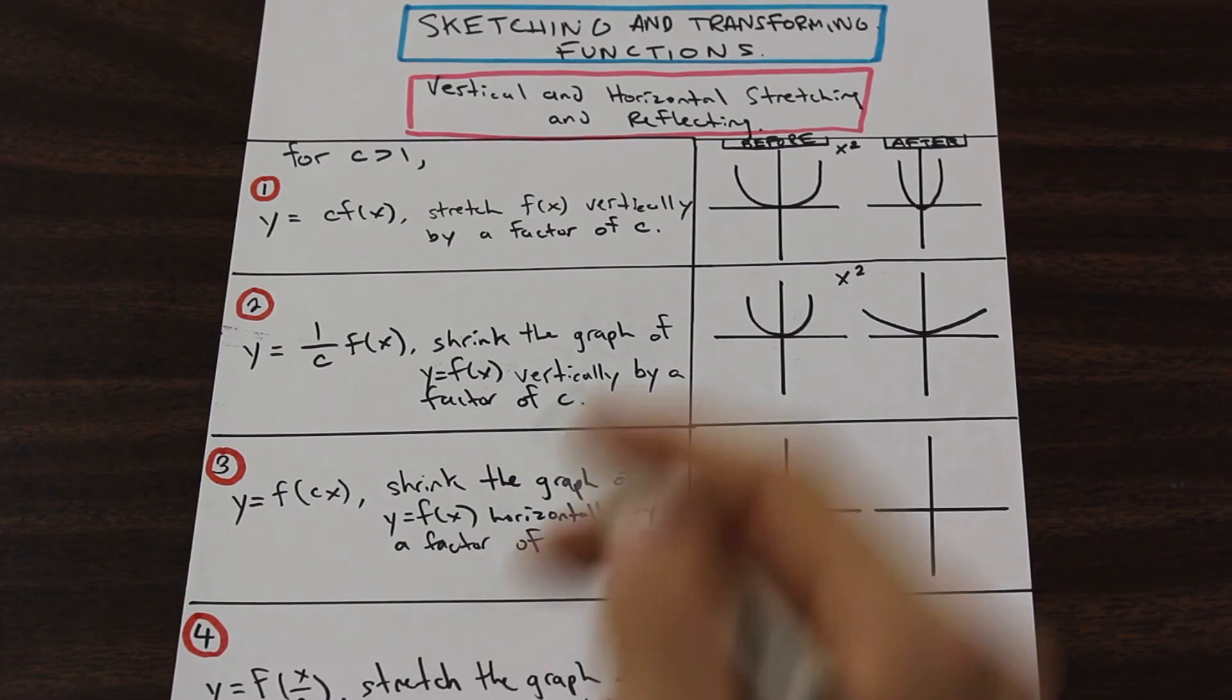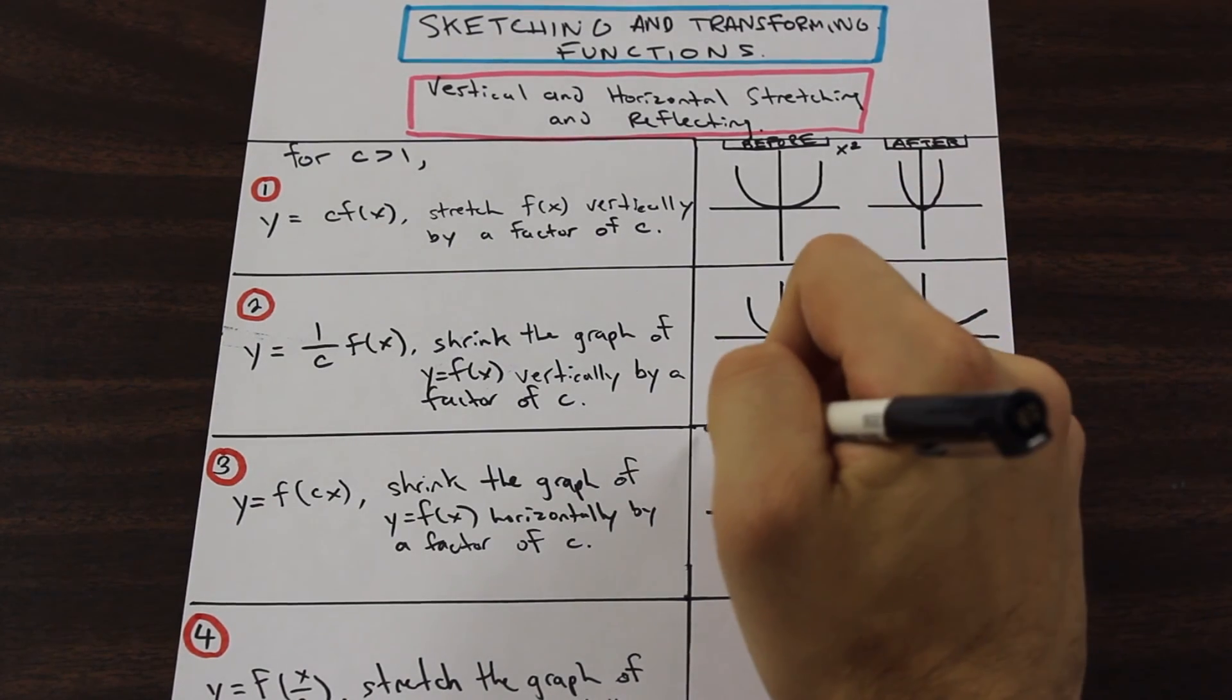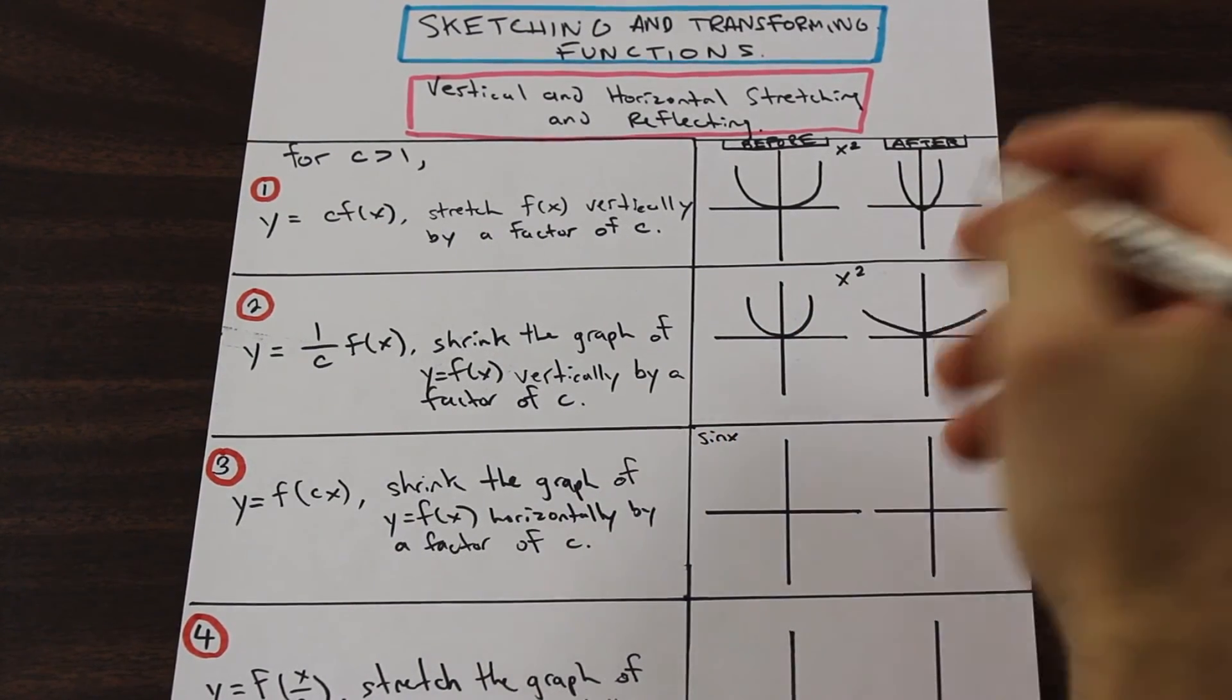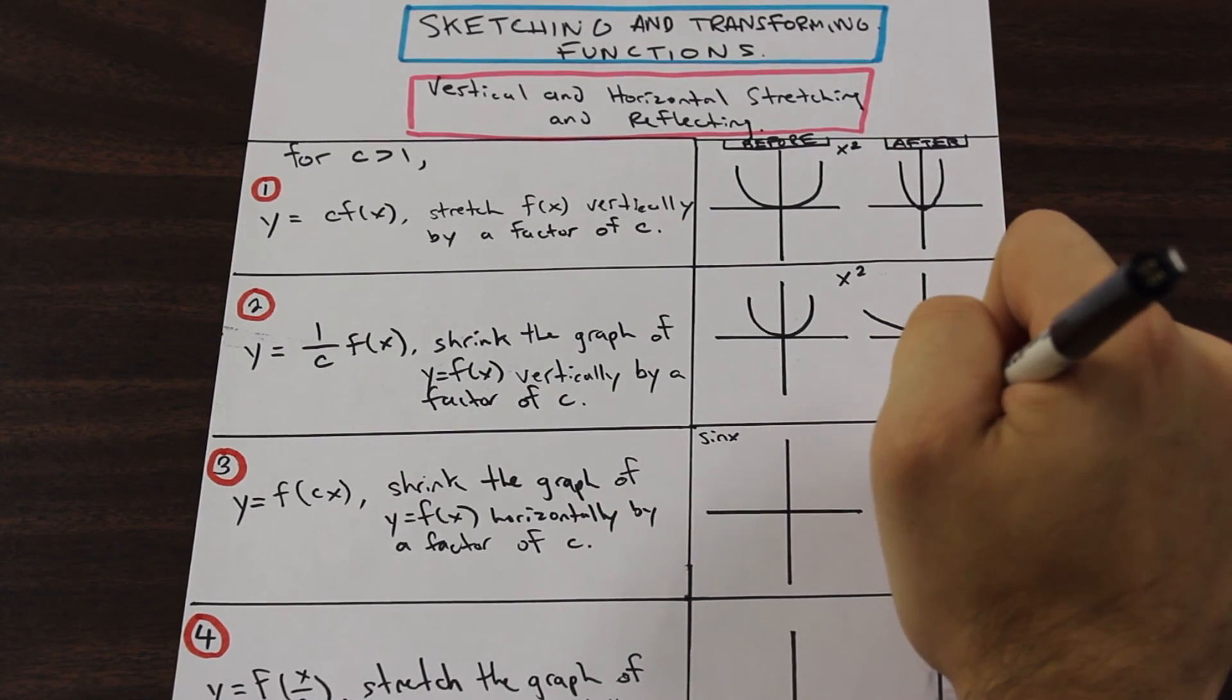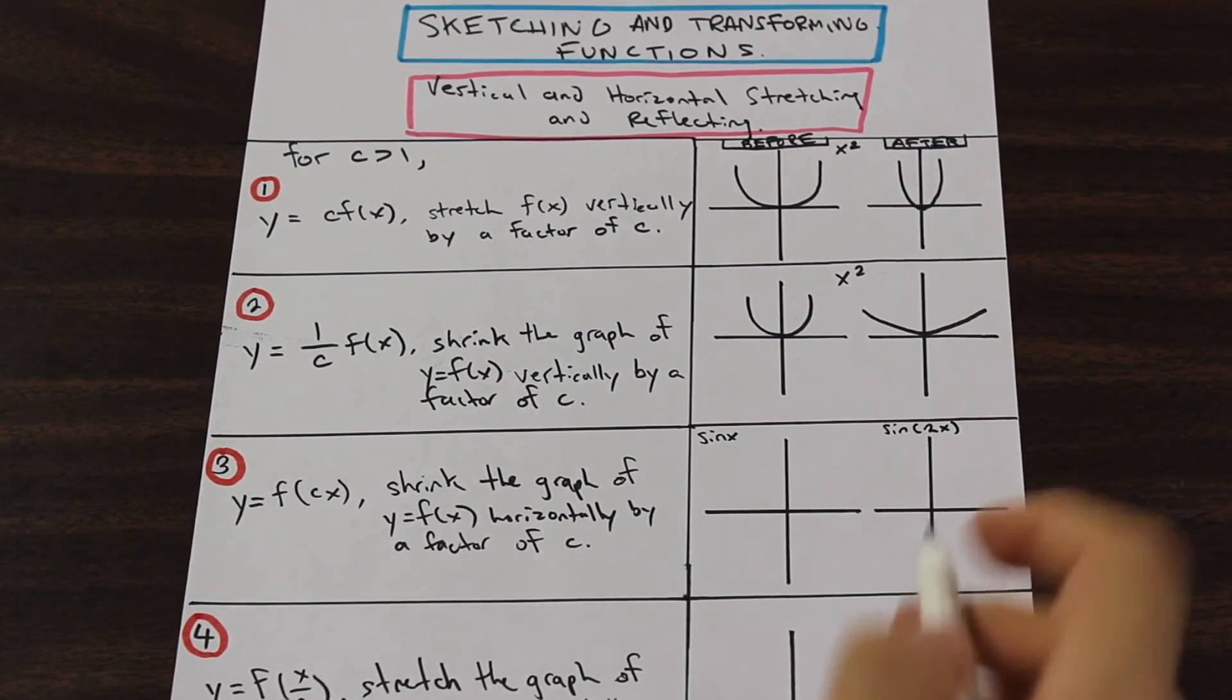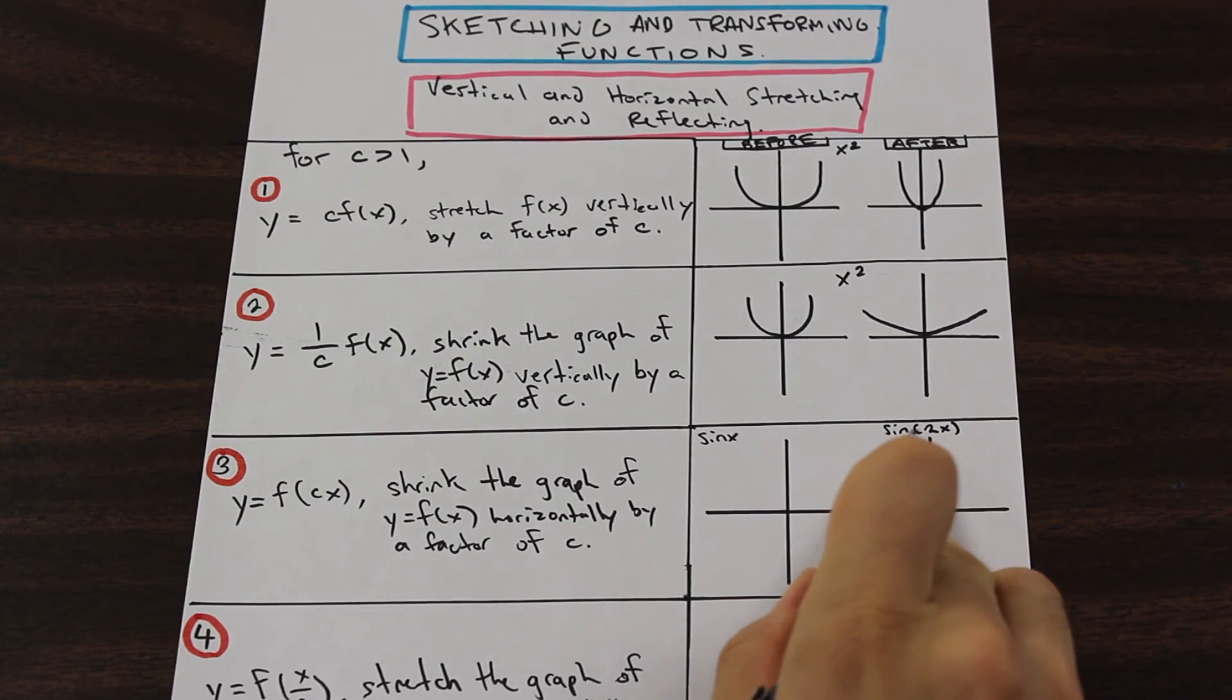So we can illustrate this a little more by using... So for this one, we're just going to use sine x. And let's just say that this one is sine 2x. So instead of the constant being on the outside, it's on the inside.